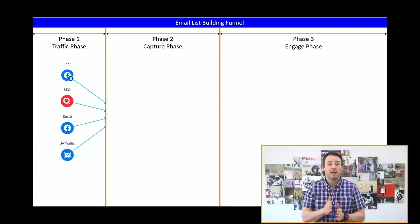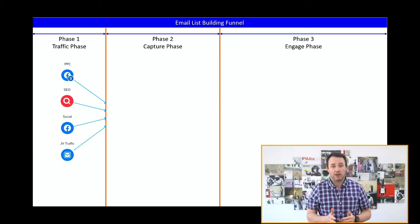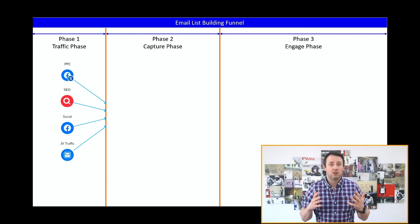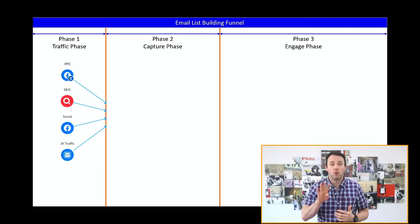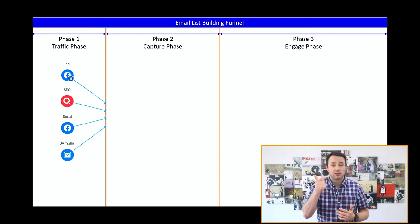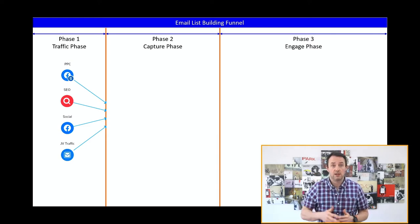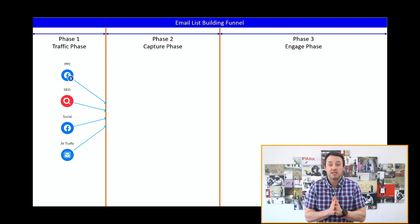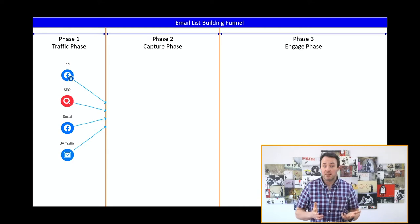Phase one is traffic. We can break your lead generation traffic sources into four primary channels: paid traffic, search traffic, JV traffic, and social traffic. Now one of the big traffic sources missing from this list is email. If you have a new lead magnet, I think it's a great idea to share with your existing email list.